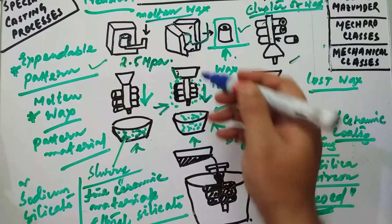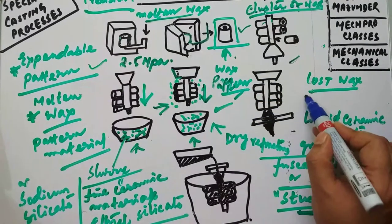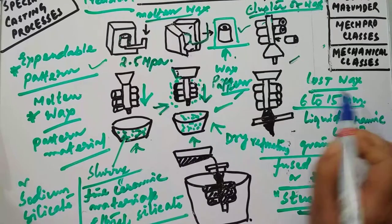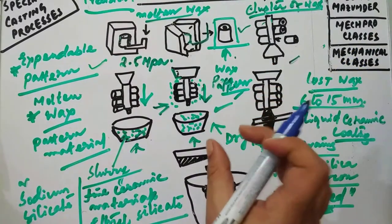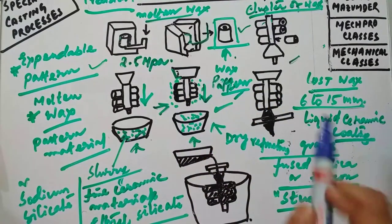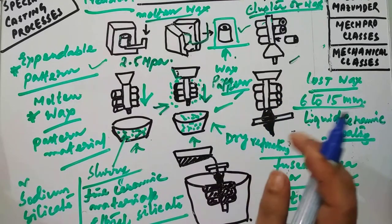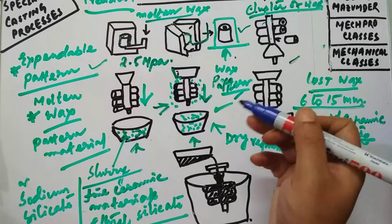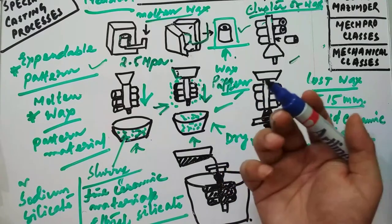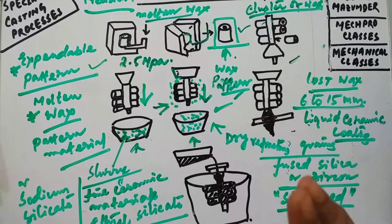You keep on continuing the dipping process until the ceramic shell reaches a thickness of 6 to 15 millimeters. The mold is then ready for further processing. The required shell thickness depends on the casting shape, mass, type of ceramic, and the binder used.